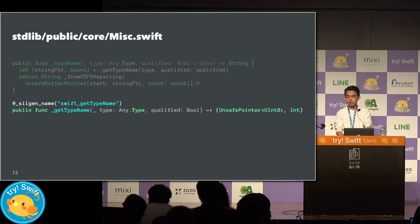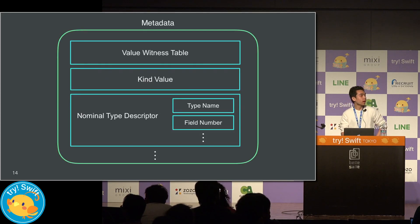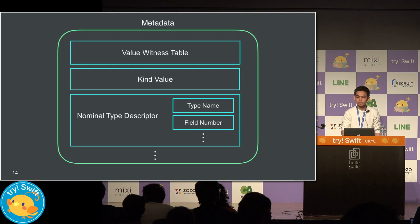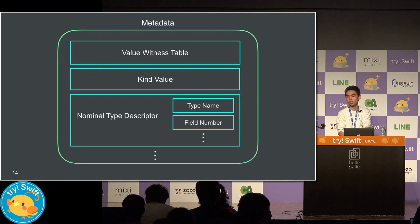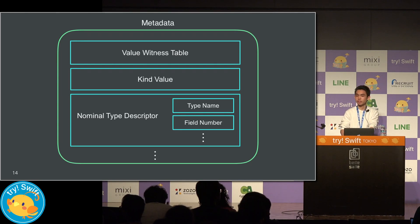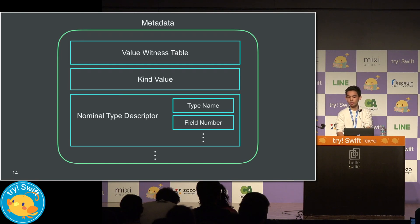How is metadata represented in the memory world? As you can see in the figure, metadata is broken down and represented as a value witness table, which is a group of functions for manipulating instances, and a kind value, which represents the kind of type such as class, struct, and so on, and a nominal type descriptor, which records the detailed information of the type. In the case of a class, a V-table is also included. And in the case of a generic type, generic parameters are embedded dynamically.